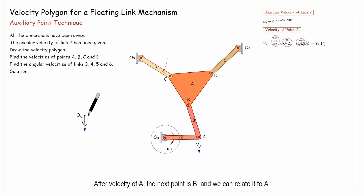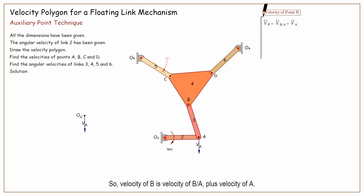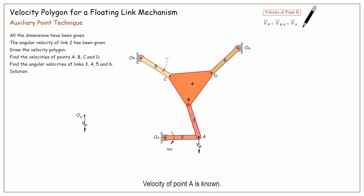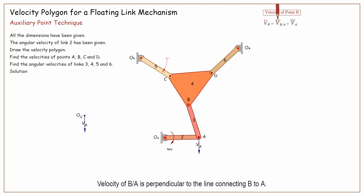After the velocity of A, the next point is B, and we can relate it to A. So, velocity of B is velocity of B with respect to A, plus velocity of A. Velocity of point A is known. Velocity of B with respect to A is perpendicular to the line connecting B to A. But the absolute velocity of B is totally unknown, in terms of both magnitude and direction.